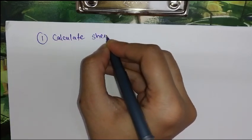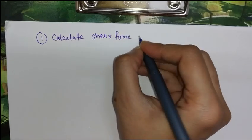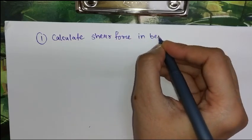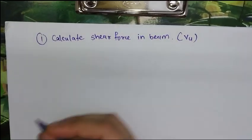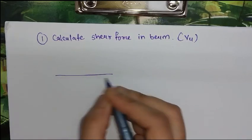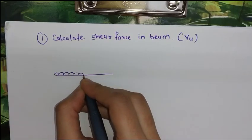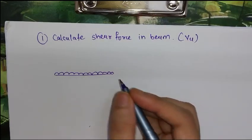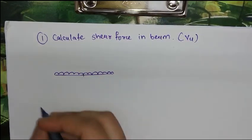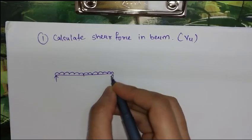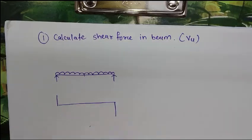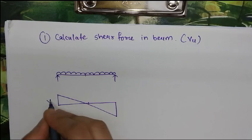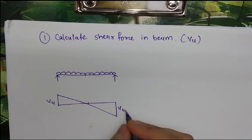We can denote shear force as VU. To calculate shear force in a beam — let's say this is one beam subjected to UDL. Drawing the shear force diagram, we know the shear force will be maximum at the support, so we have to calculate this particular VU max.